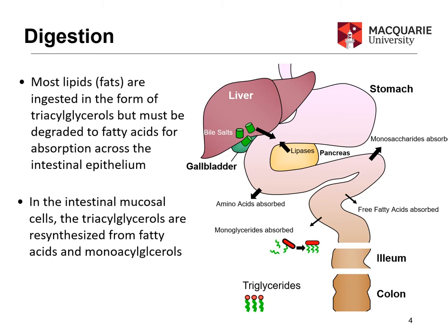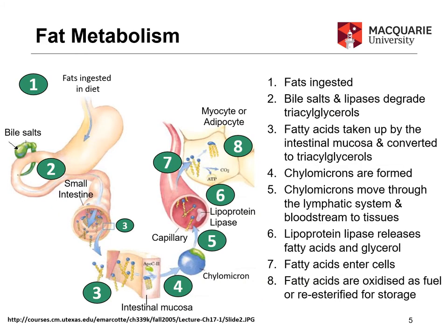Once absorbed, we actually reassemble the monoacylglyceride with the two fatty acids back to a triacylglyceride or triglyceride — they're the same thing. This is an overview of fat metabolism. Let's go into a little more detail to see how we break down those triacylglycerides into fatty acids and monoacylglycerides, and step through how we get from ingestion of fats to storage of fats.